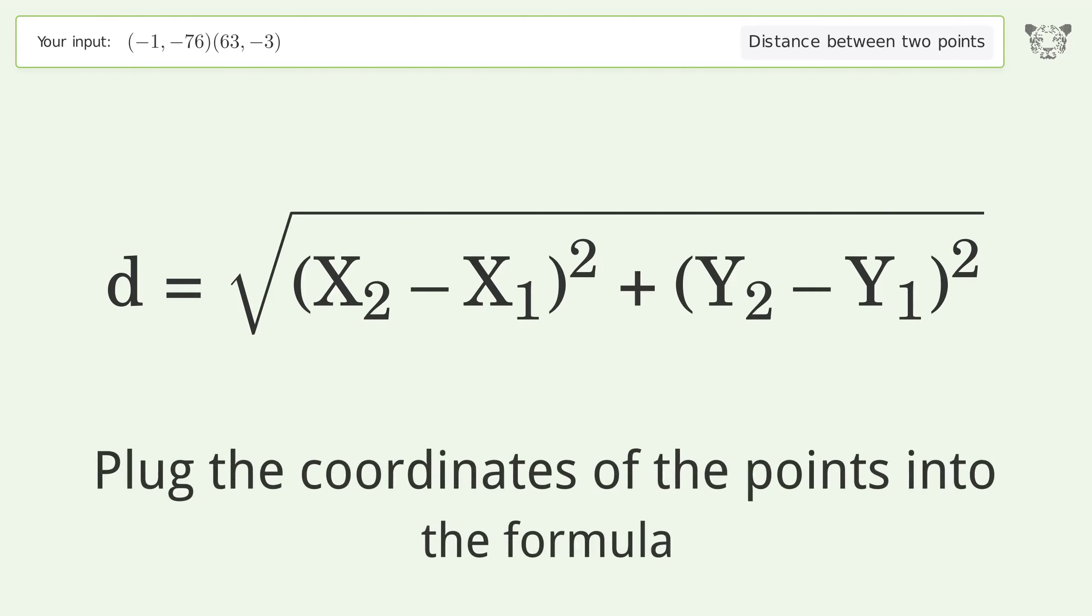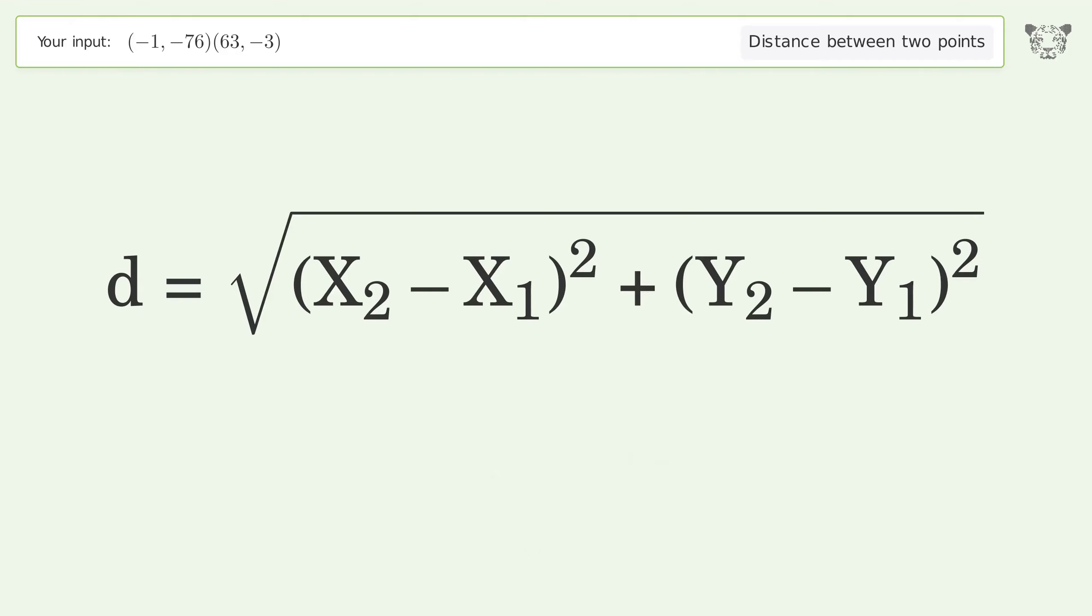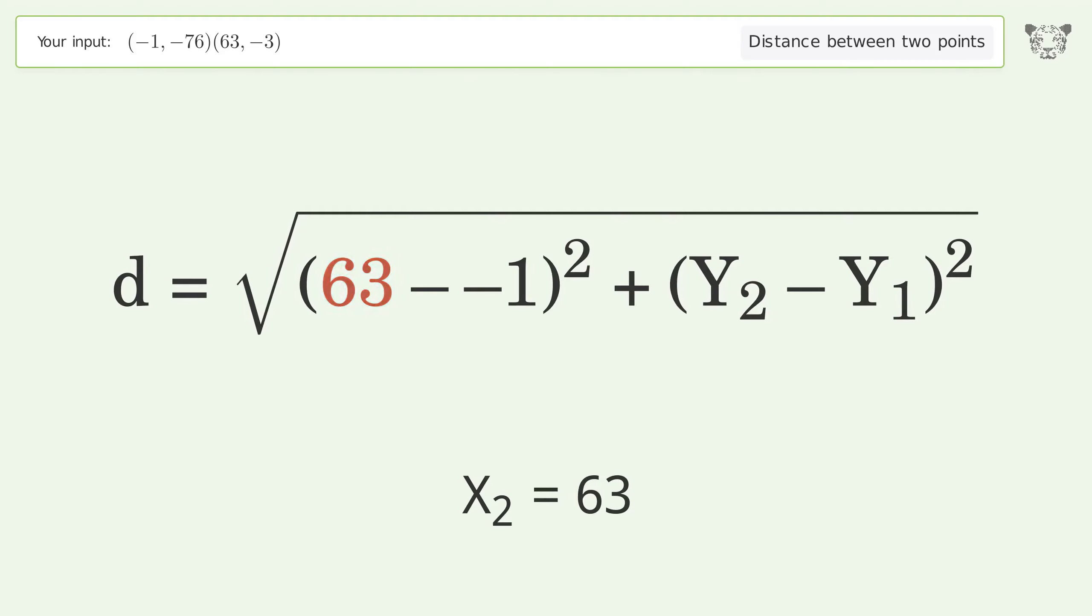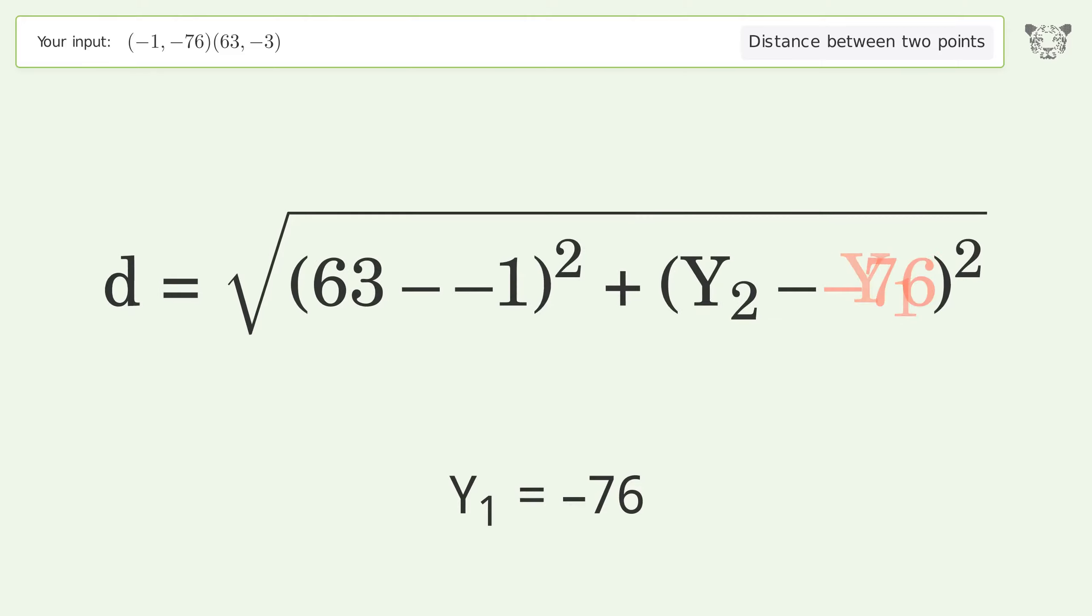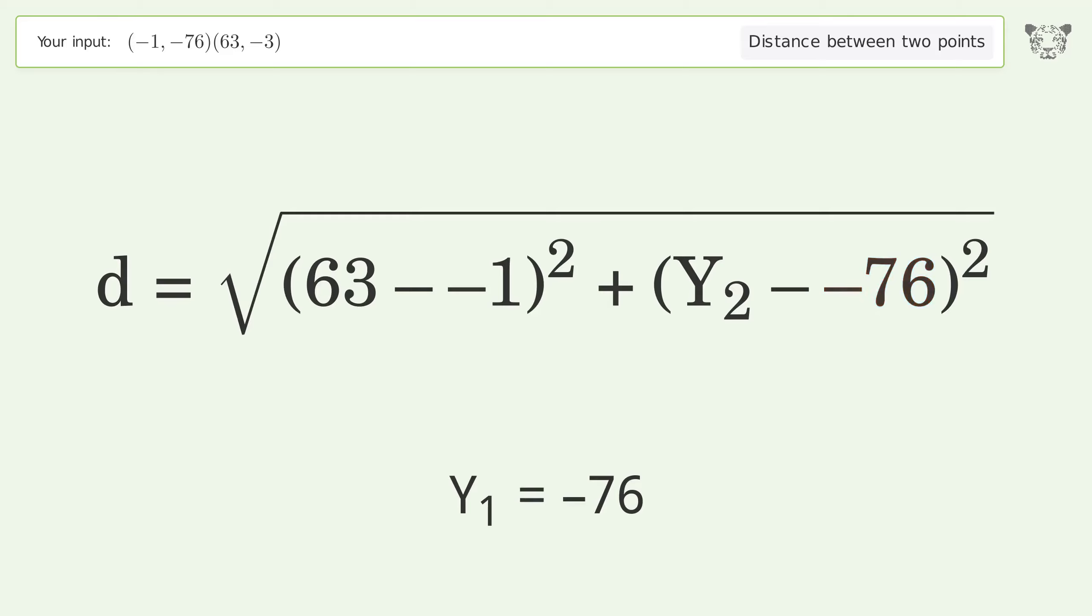Plug the coordinates of the points into the formula. x1 equals negative 1, x2 equals 63, y1 equals negative 76, y2 equals negative 3.